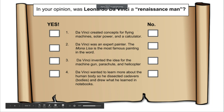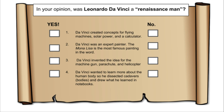Now you're going to check off yes or no in your opinion: Da Vinci created concepts for flying machines, solar power, and a calculator. Da Vinci was an expert painter. The Mona Lisa is the most famous painting in the world. Da Vinci invented the idea for the machine gun, parachute, and helicopter. Da Vinci wanted to learn more about the human body so he dissected cadavers — a cadaver is a dead body — dissected means he cut it open and looked at it, drawing what he learned in his notebooks. That's how he was able to draw out those muscles.